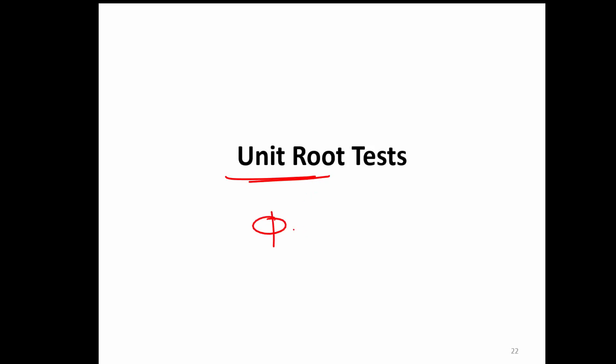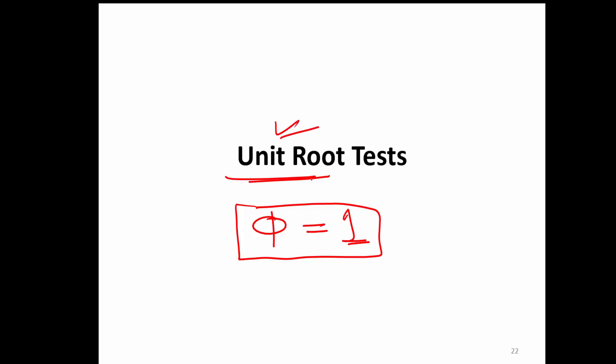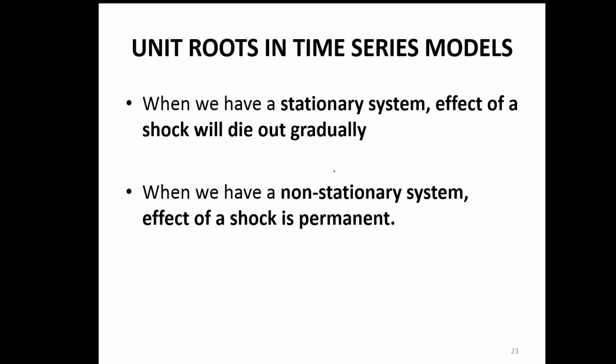This is where we need to understand what is known as the unit root test. The name suggests that unit root means we are only talking about how to find out whether phi — in the non-stationary series — is 1 or not. In a stochastic trend series, if phi is 1, then we confirm it is a random walk process, and that is what we call a unit root.